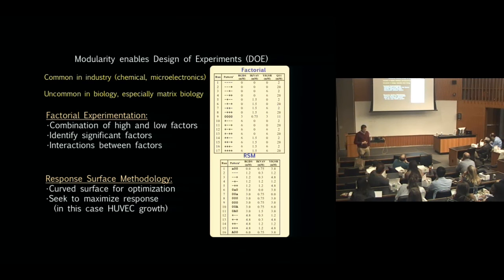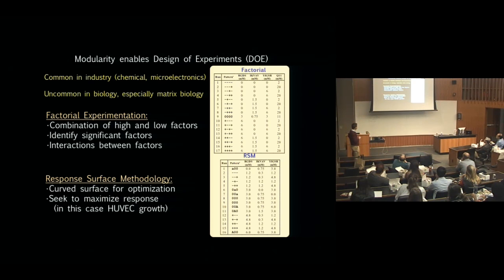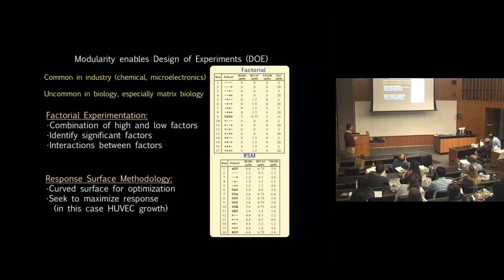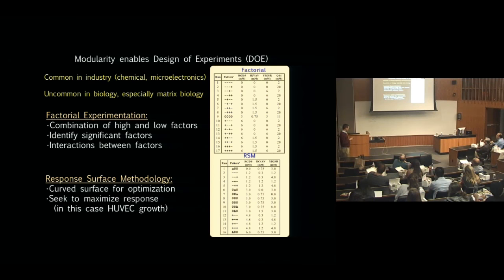What this opens up is that we have modular, engineerable systems made of molecules and tools we ourselves make. Biology is resistant to multifactorial engineering. Even though design of experiments is common in chemical engineering, chemical process design, and microelectronics, it's rarely used in biology because you can't easily control five factors simultaneously with gradated control over each one to find an optimum.